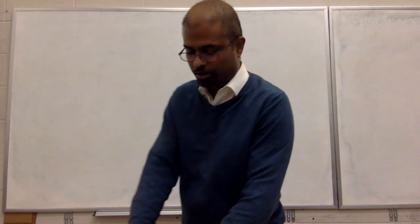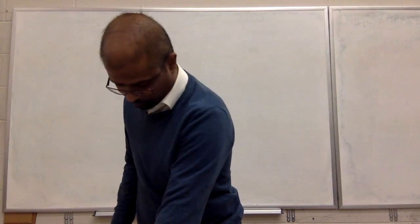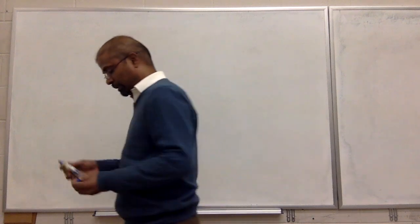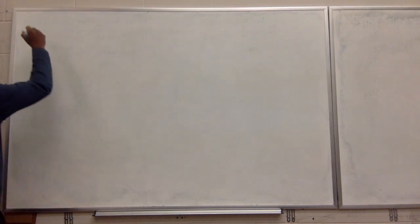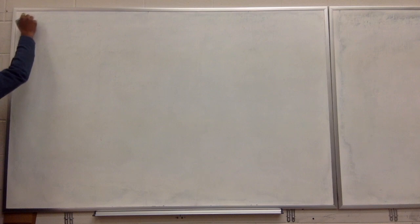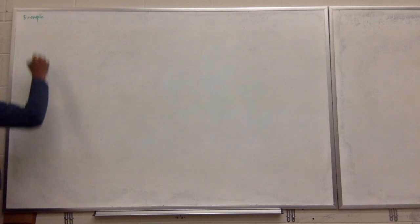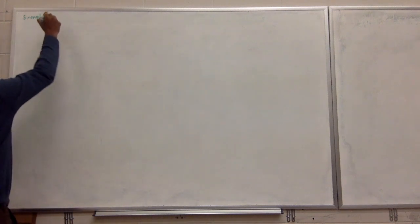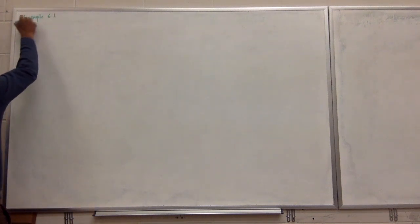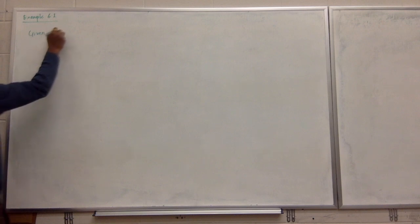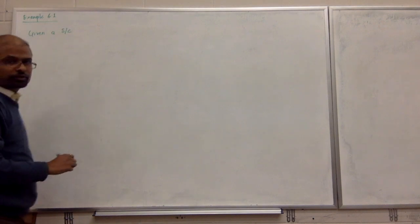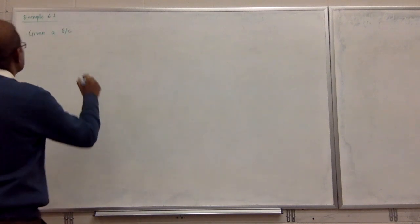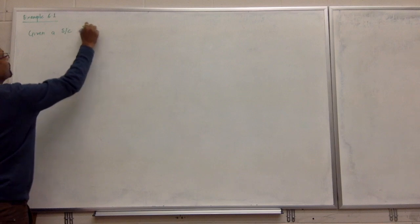I will do a quick problem on Hohmann transfer to help you understand it better. This is example 6.0. You can follow it as 6.0. So what you have is a spacecraft of mass 2000 kg.